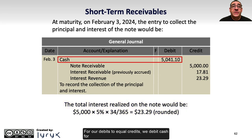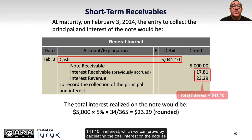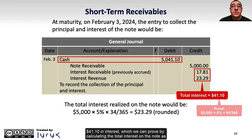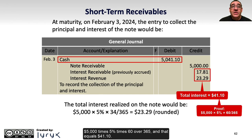For debits to equal credits, we debit cash for $5,041.10 — representing the $5,000 principal plus $41.10 in total interest. We can verify this by calculating total interest as $5,000 times 5% times 60 over 365, which equals $41.10.